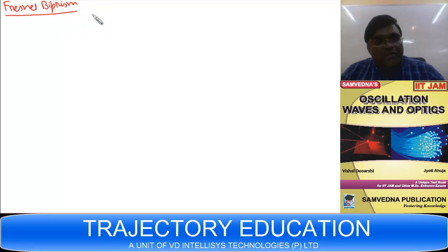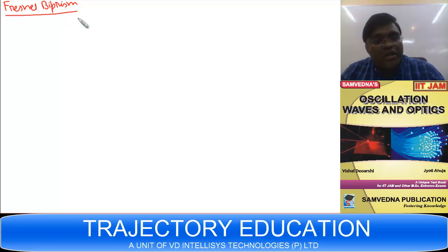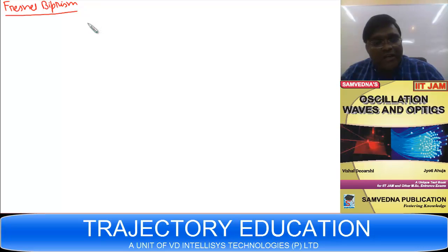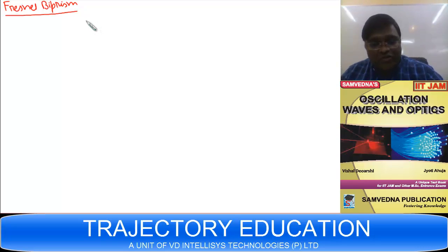Fresnel Biprism is yet another arrangement to obtain two coherent sources. It consists of two prisms having a very small refracting angle, placed base to base.